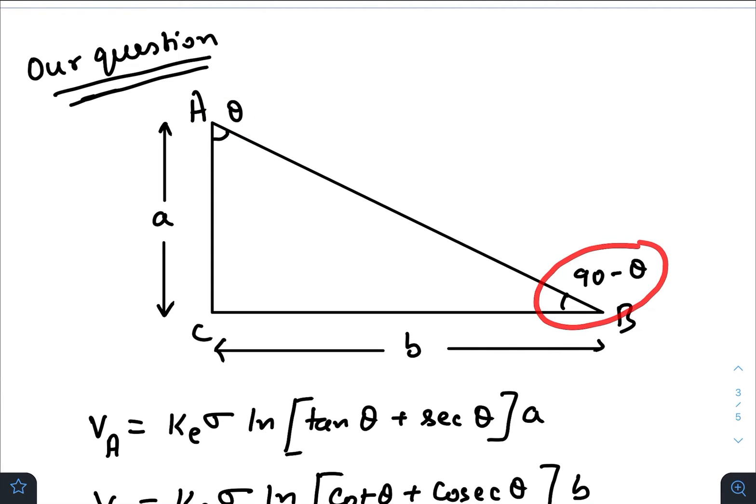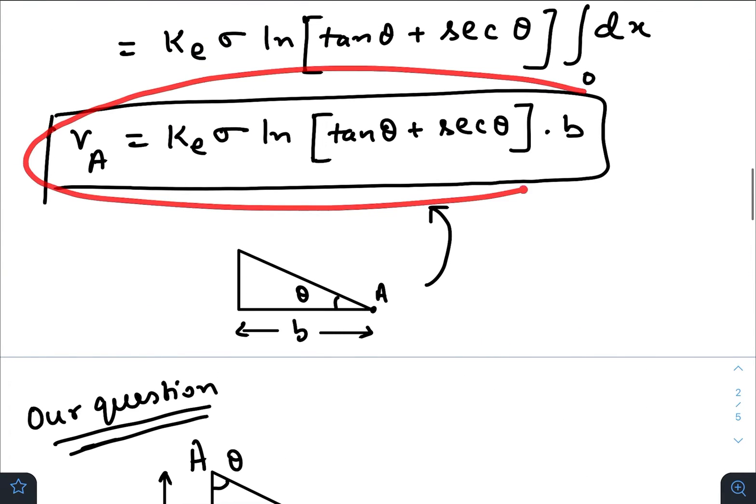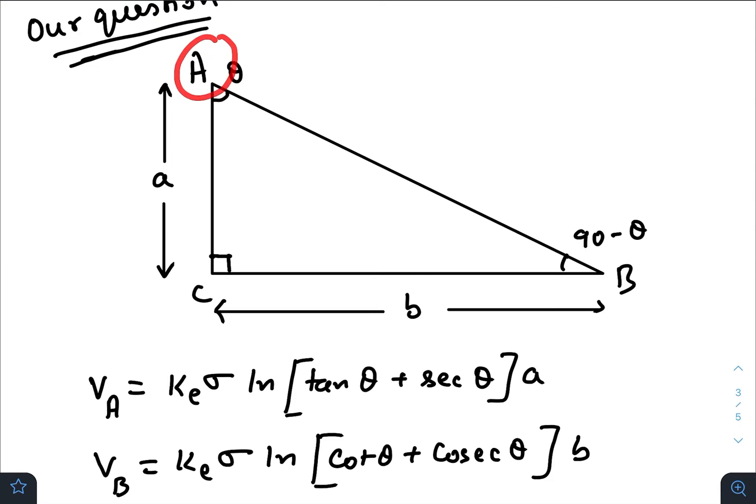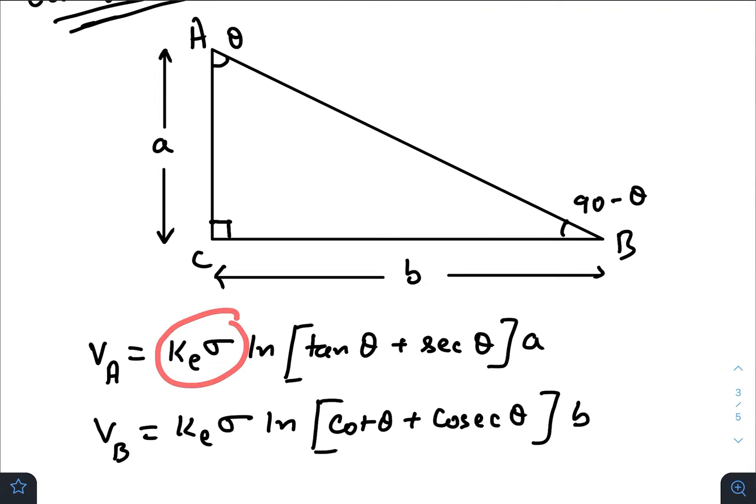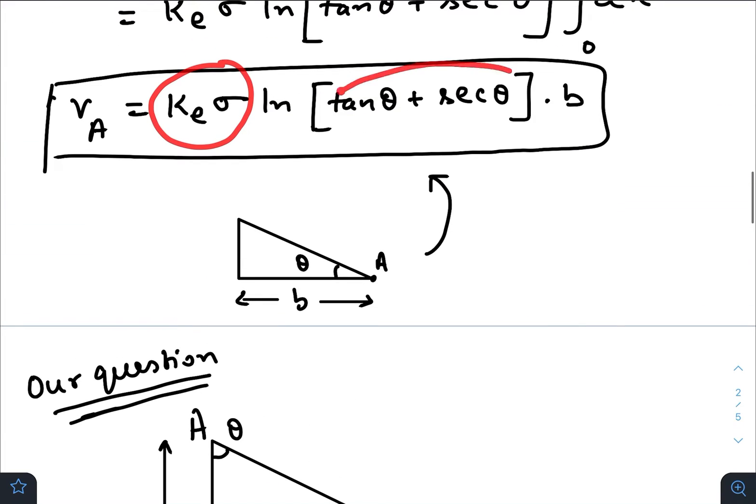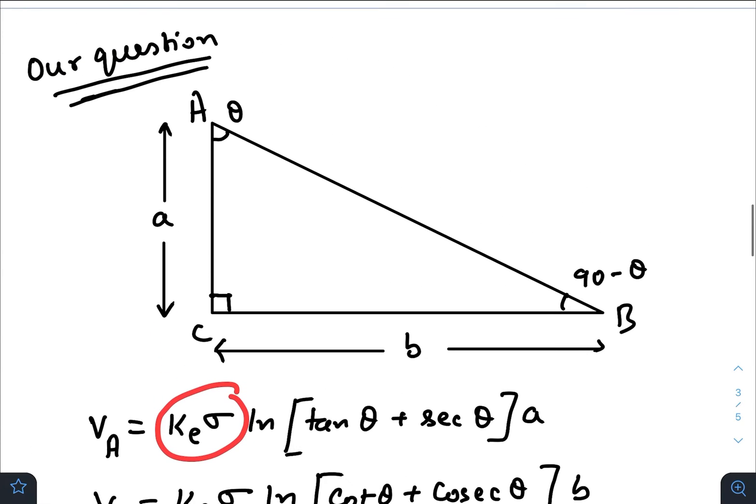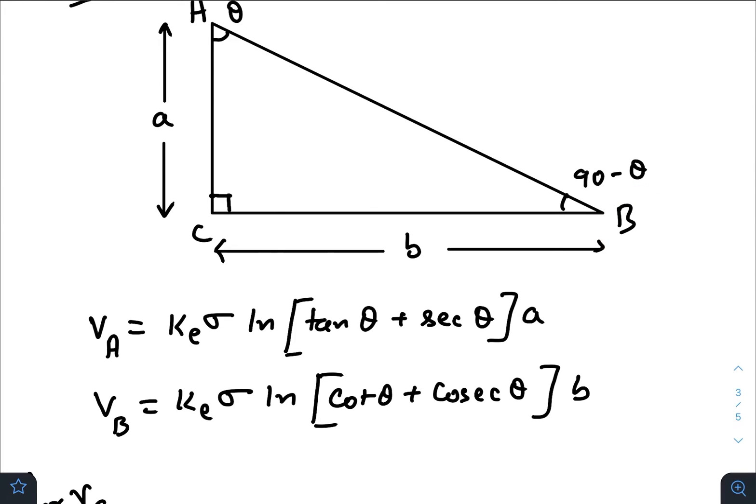Now please use this formula. For vertex A, the potential would be k_e sigma ln of tan theta plus sec theta times this length. Because if you just rotate your screen anticlockwise by 90 degrees, this one would be the base. So this should be a. For point B, we will just replace theta with 90 minus theta, so tan of 90 minus theta would give you cot theta. Sec, that means 1 by cos, that means 1 by sine—cosec theta.